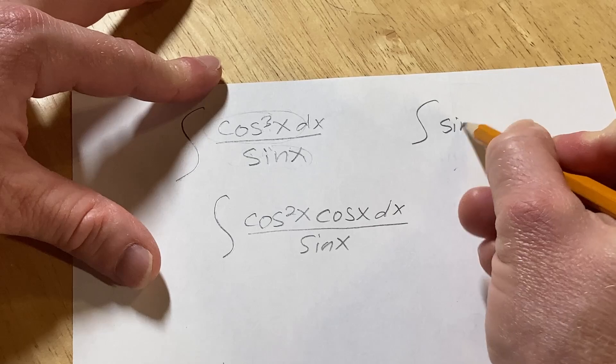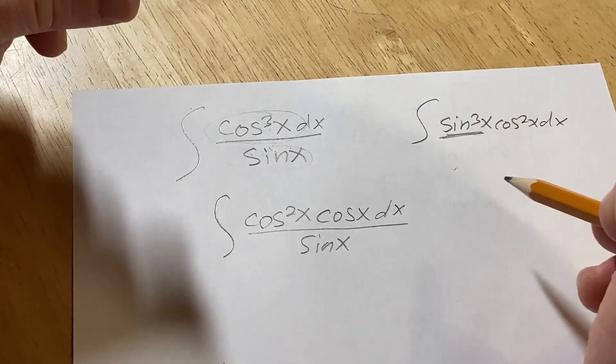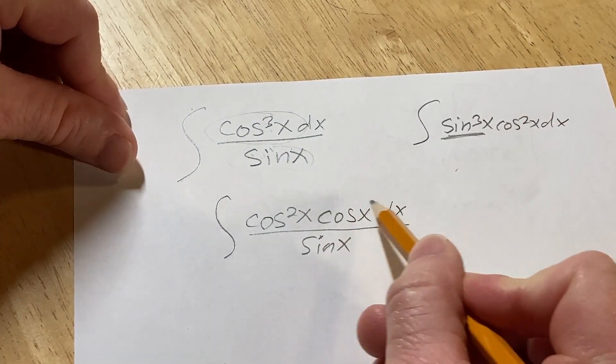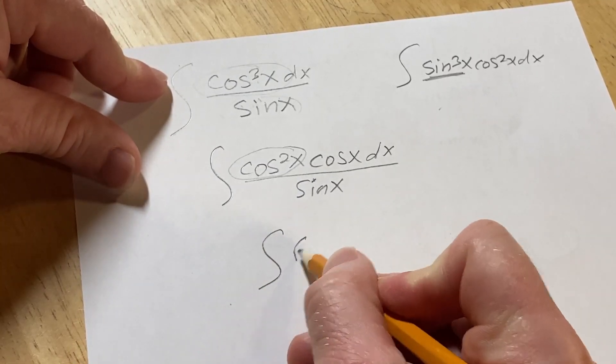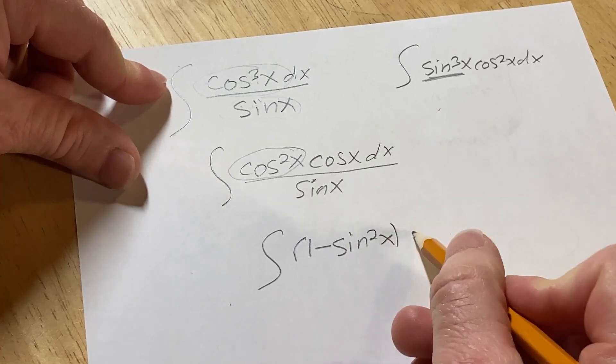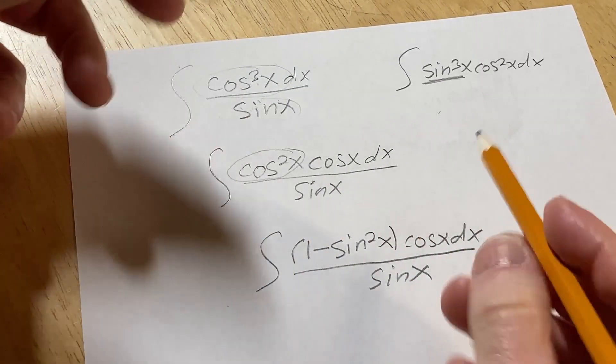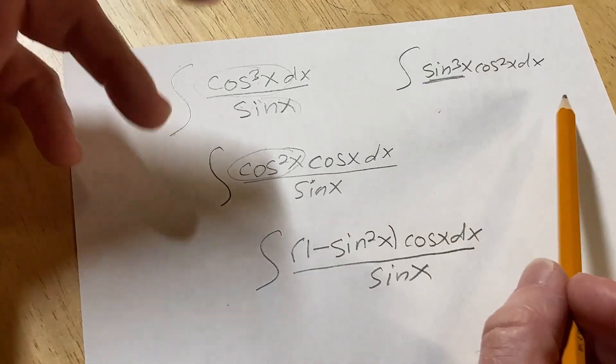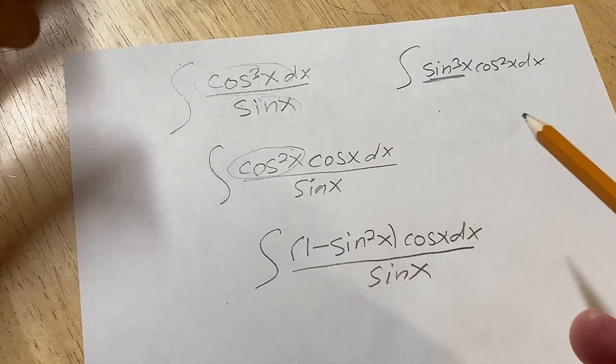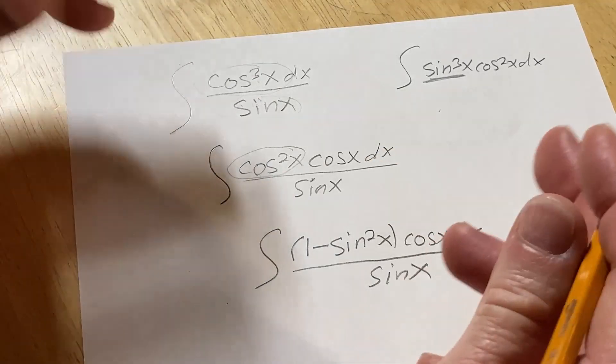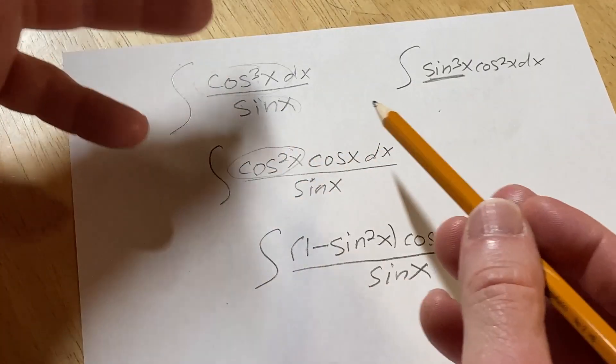For example, if you had sine cubed x cosine squared x, you would save a copy of sine. So that's what you would do in that case. We're saving a copy of cosine because we're going to let u be sine. So what you do now is use an identity here. We can write this as (1 minus sine squared x) cosine x dx over sine x. If you didn't know this trick about powers of sine and cosine, that's okay. You could probably still figure it out by messing around with it. When I took calculus two, that's what I did. I refused to memorize stuff and somehow got through the test.